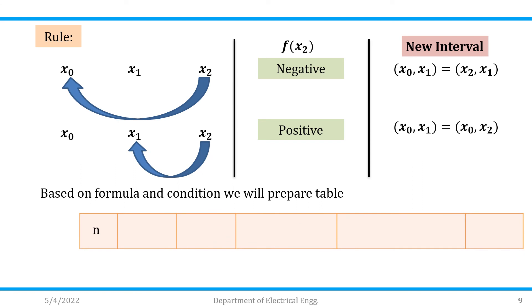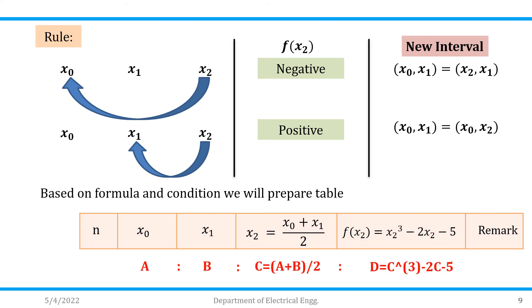The table columns are: n (number of iterations), x0 (initial approximation), x1 (another initial approximation), x2 = (x0 + x1) / 2 (bisection formula), f(x2), and remarks. In the calculator, we represent: a = x0, b = x1, c = (a + b) / 2, and d = c³ − 2c − 5. Important: keep brackets, otherwise the answer will be wrong.